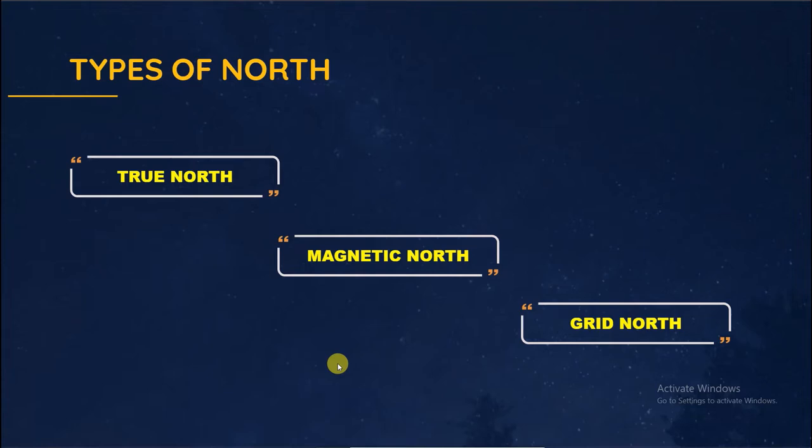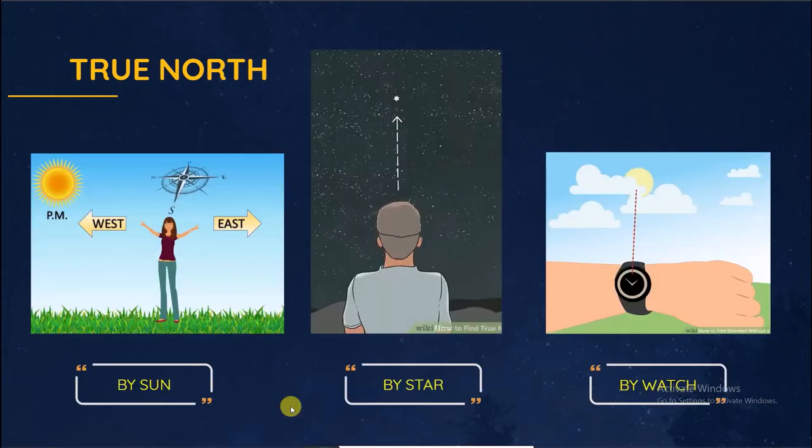There are three types of north: true north, magnetic north, and finally grid north. True north is the direction along the earth's surface towards the geographical north. North pole is observed by observer without having compass, like using sun, stars, and by watch method.